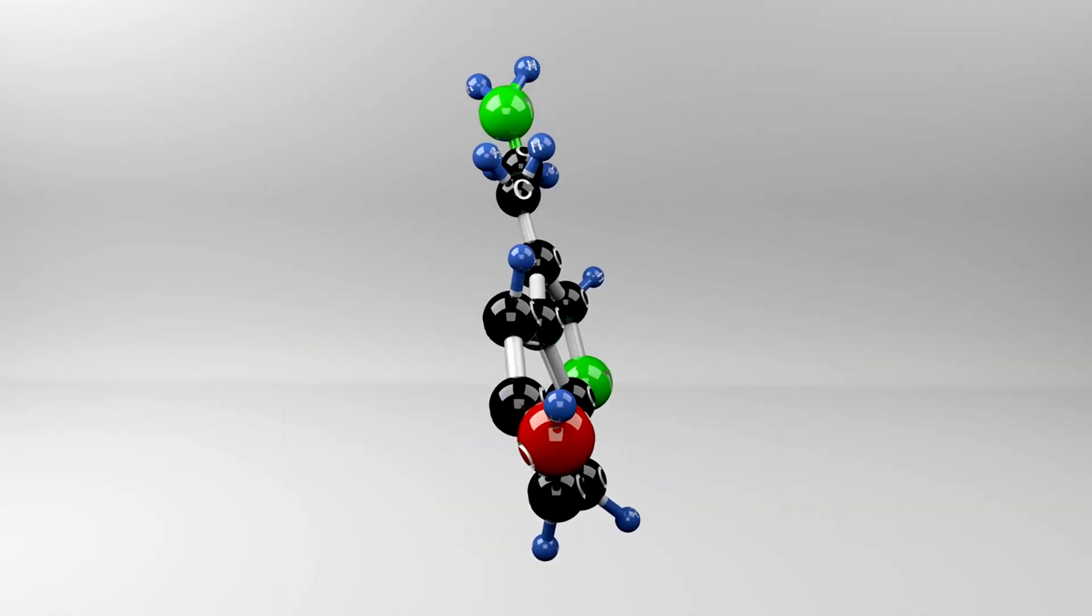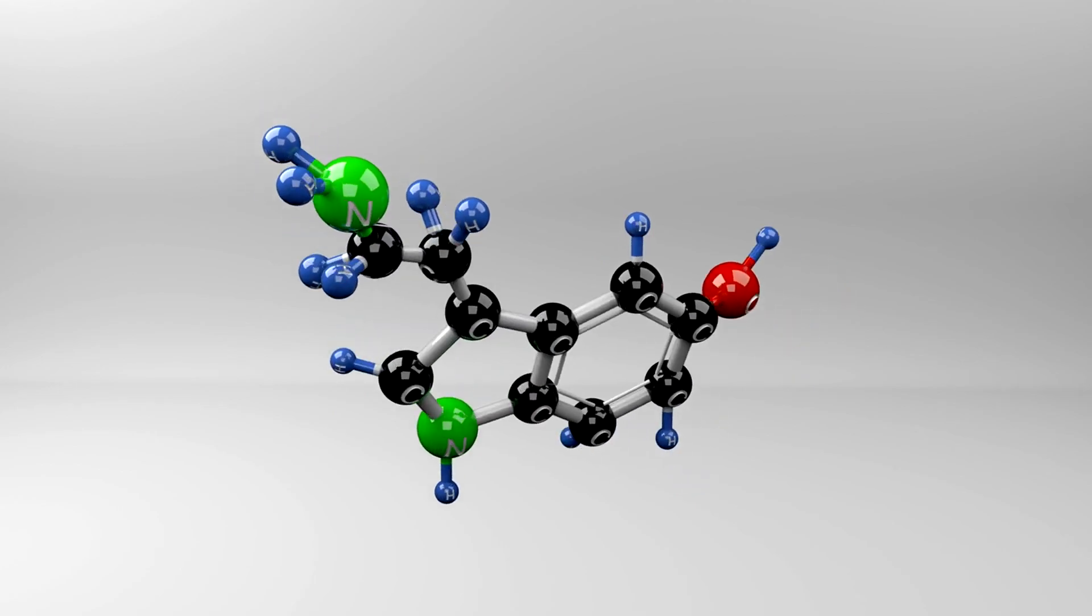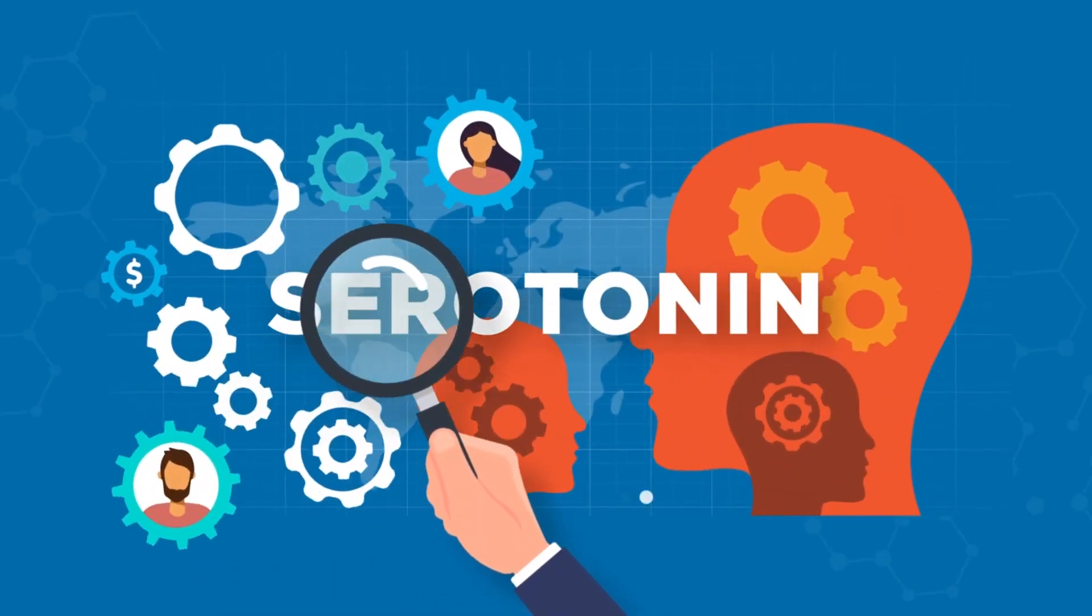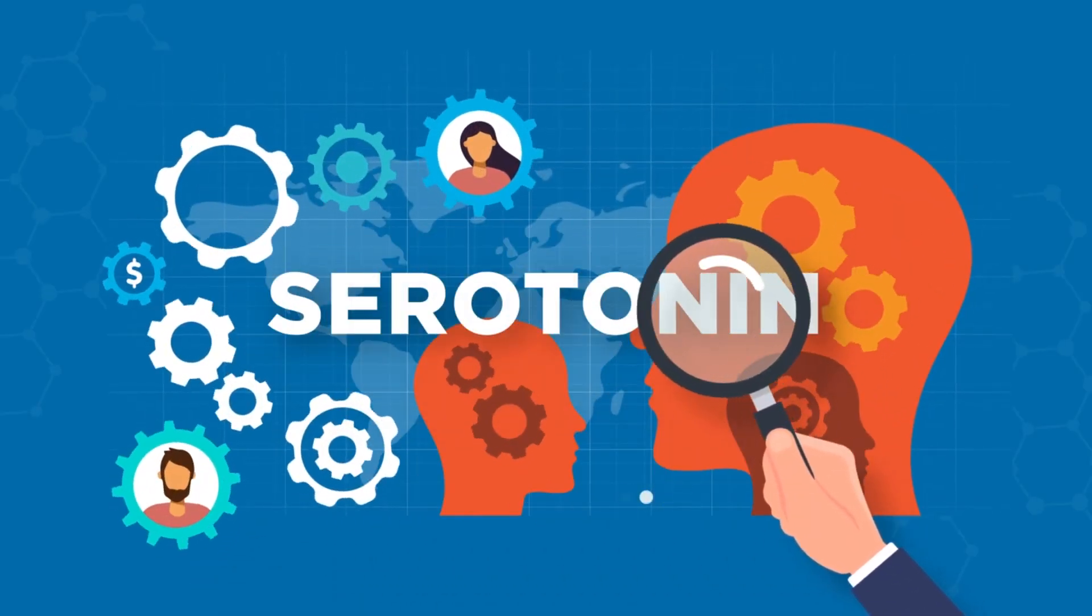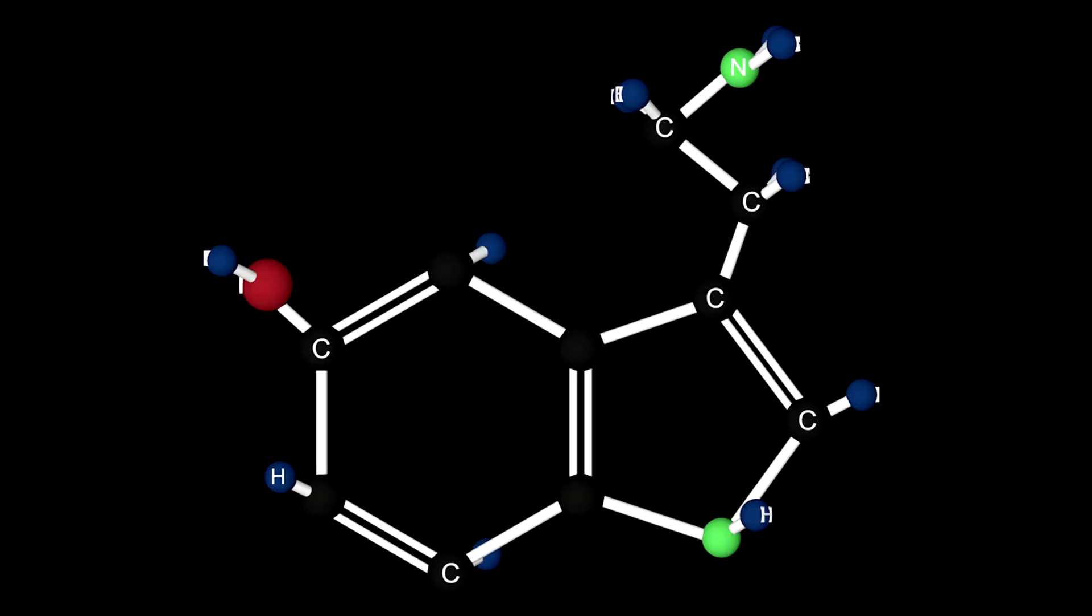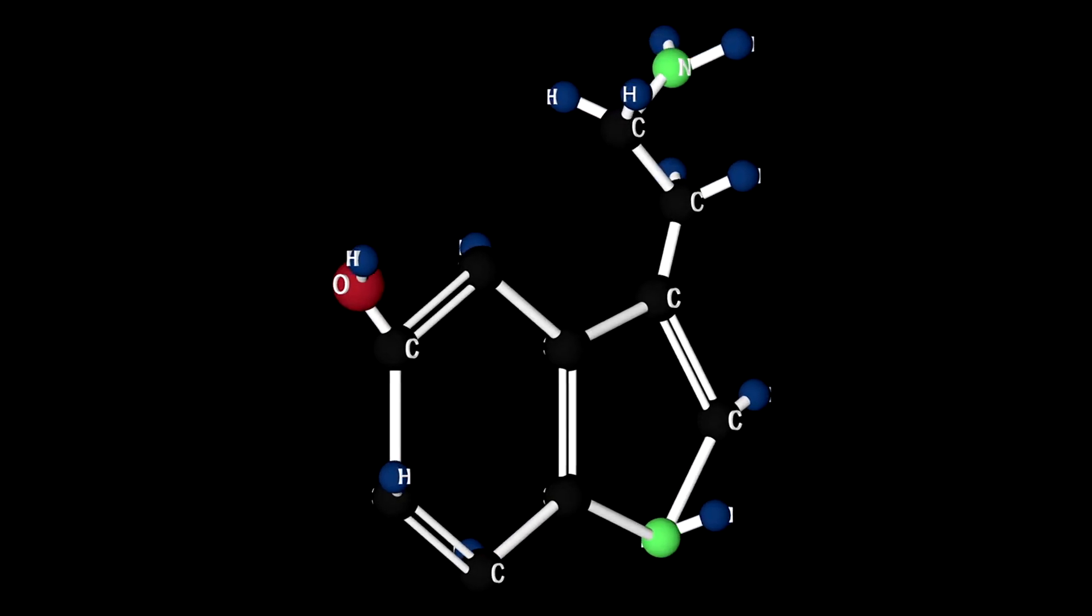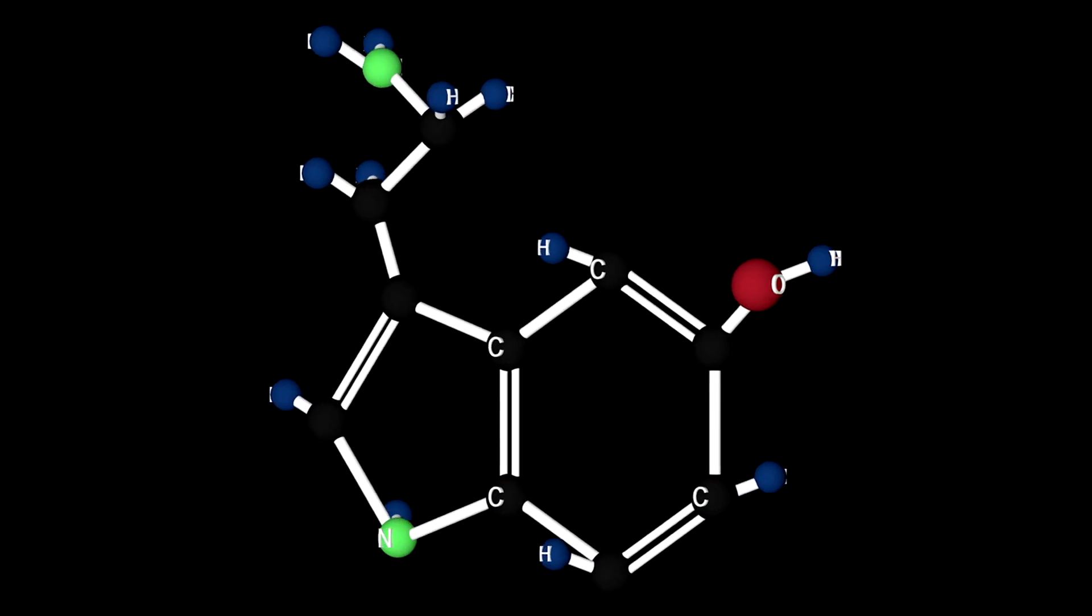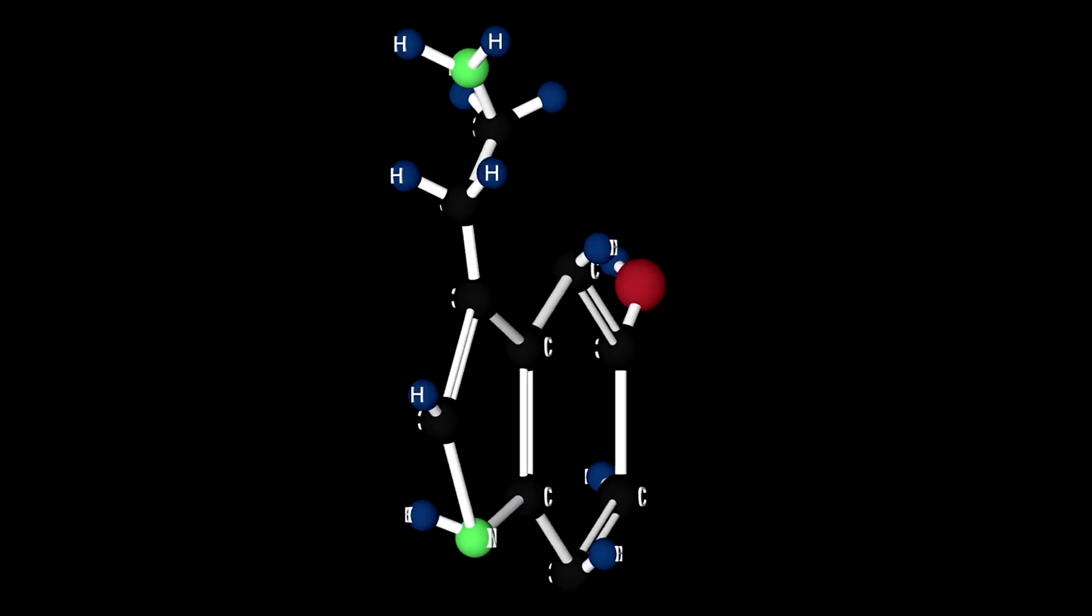Serotonin serenade, gut microbes, and mood regulation. Serotonin, known as the feel-good neurotransmitter, is a key player in regulating mood and emotions. What many don't know is that a significant portion of serotonin is produced in the gut, primarily by gut microbes.